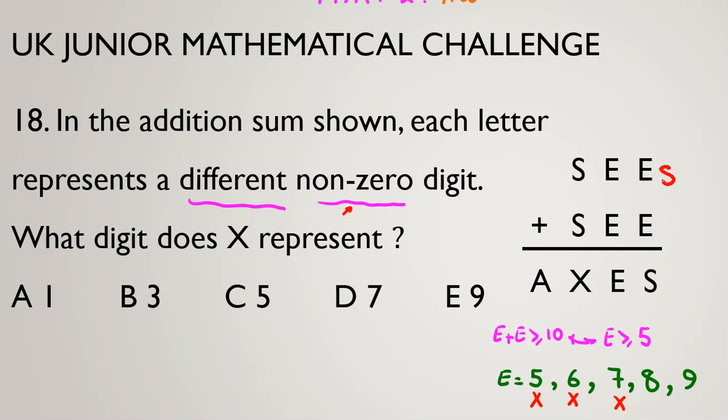Let's check 8. 8, 8, 8, 16. And we have 1 here. And 8 again, 8 again, 16 plus 1, 7. It was 8, but here we've reached that E is 7. Contradiction.